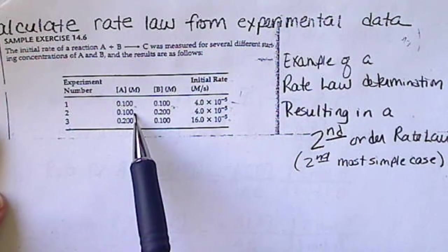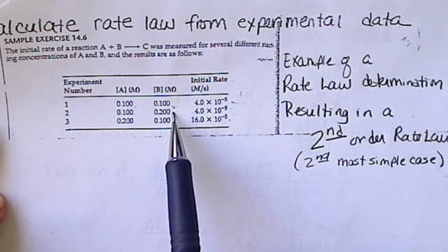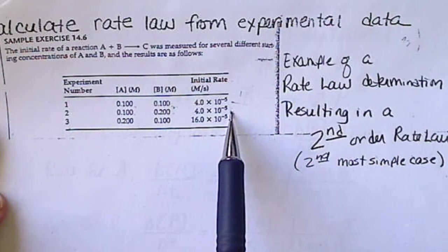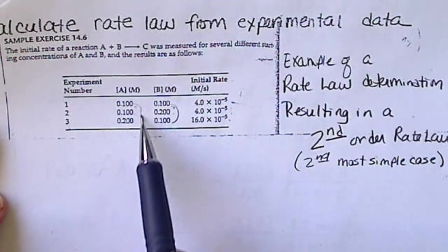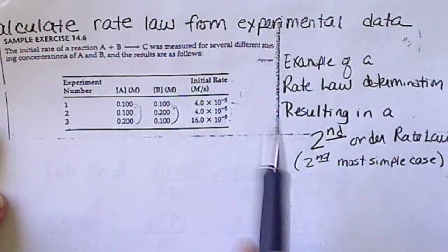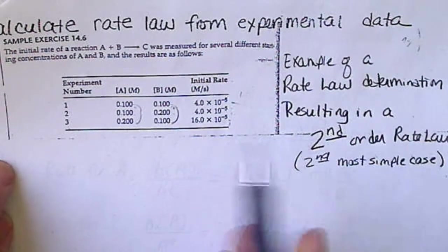Then, we keep A the same, and we vary the concentration of B. And again, we measure the rate. Then, we keep B the same, and we double the concentration of A, and we see what that does to the rate.